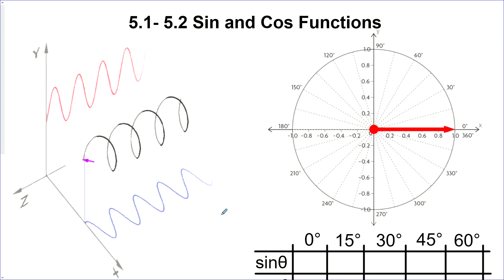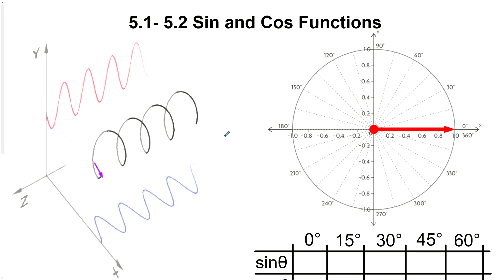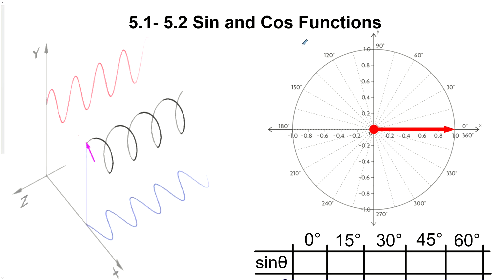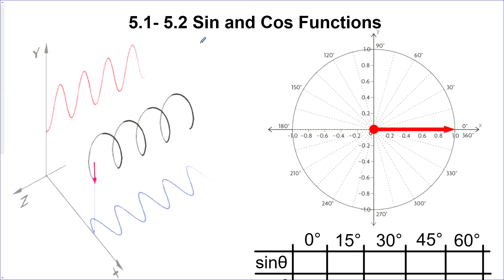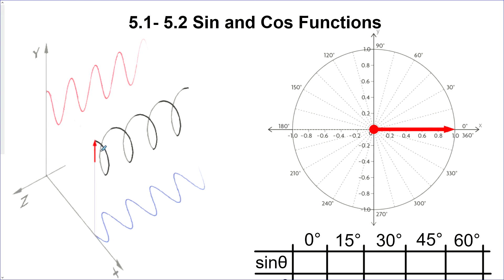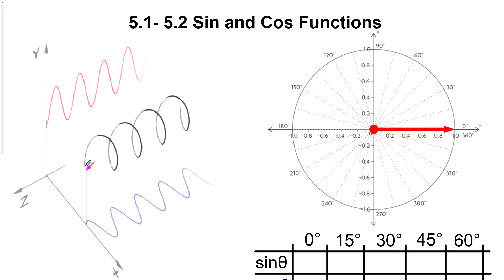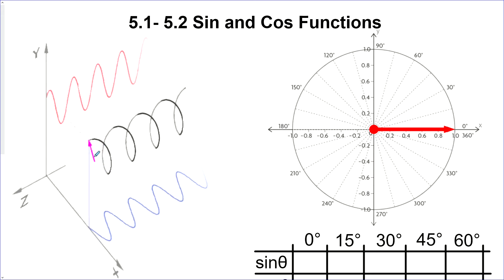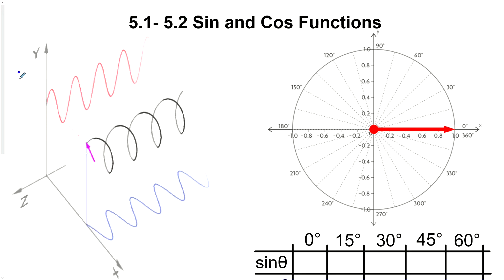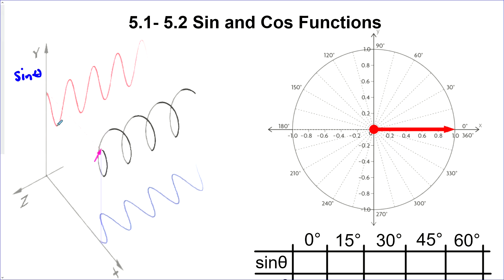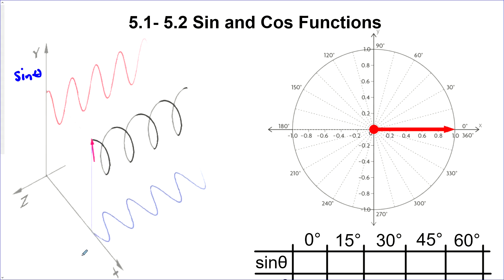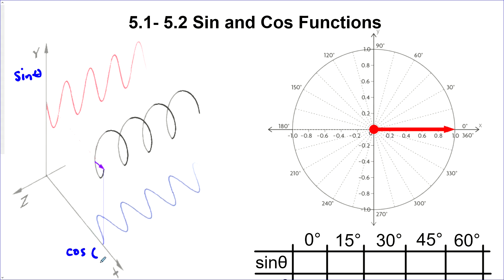Sections 5.1 and 5.2 cover sine and cosine functions together because they are two parts of the same thing. As we go around a circle, the y-value of our coordinate is sine and the x-value of our coordinate is cosine.